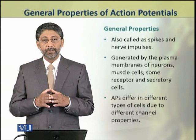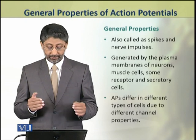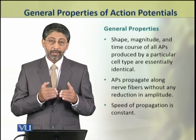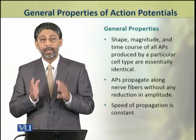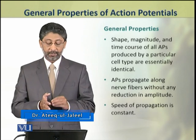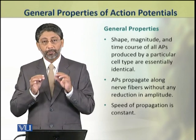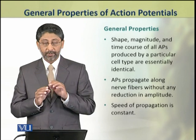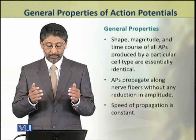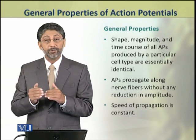Action potentials differ in different types of cells due to different channel properties. However, the shapes, magnitudes, and time course of all action potentials generated by a single type of cell are always essentially identical. Action potentials propagate along the nerve fiber without reduction — that is, without decrement in amplitude — and the speed of propagation also remains constant.